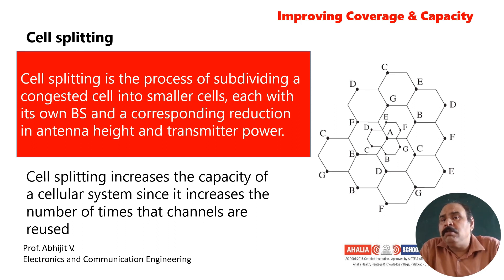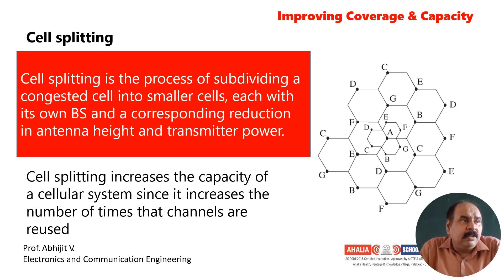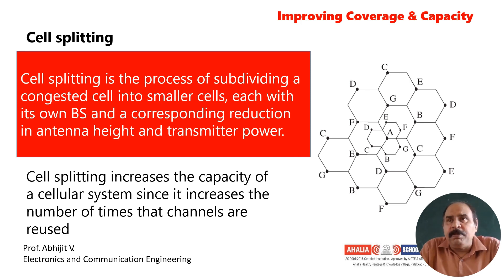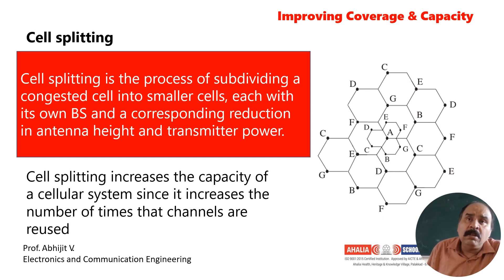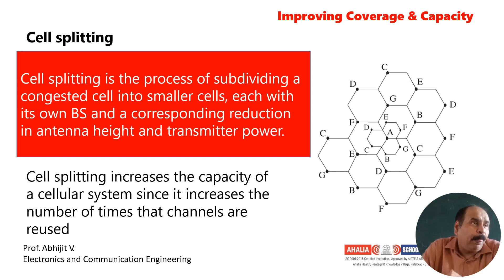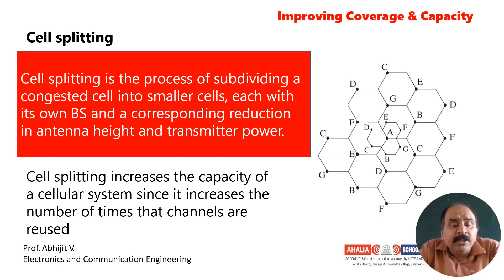Cell splitting means splitting big cells into smaller cells so that you get more coverage. There is a bigger base station which is further divided into smaller cells. You can see the small cells A, D, C and so on. Cell splitting increases the capacity of a cellular system since it increases the number of times that a channel is reused.